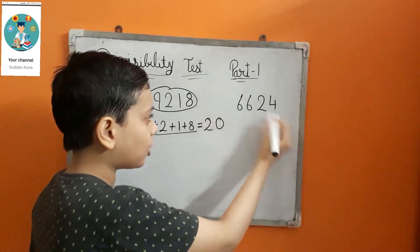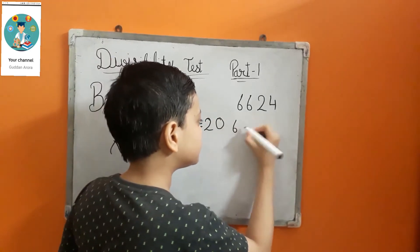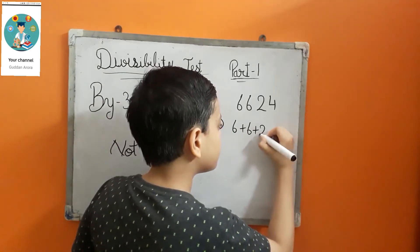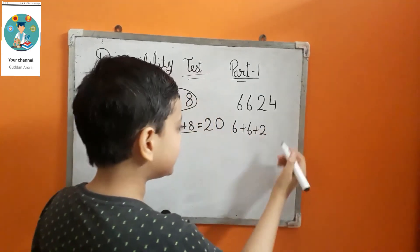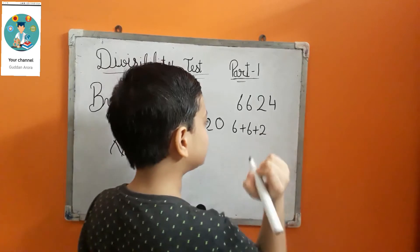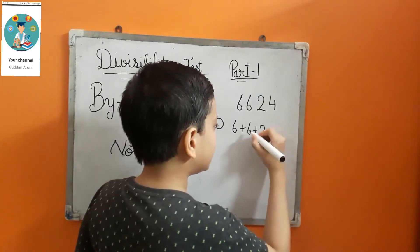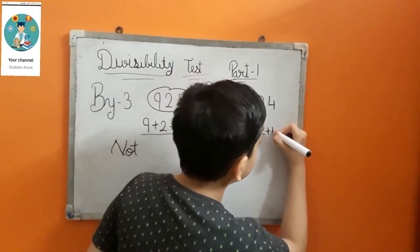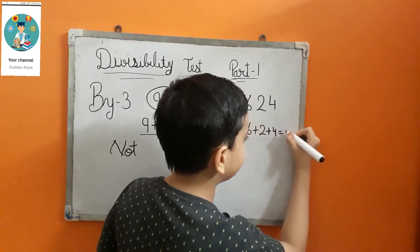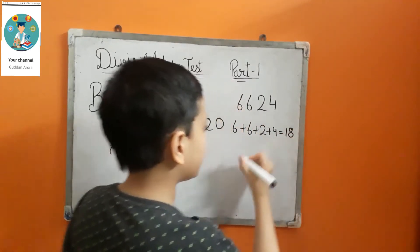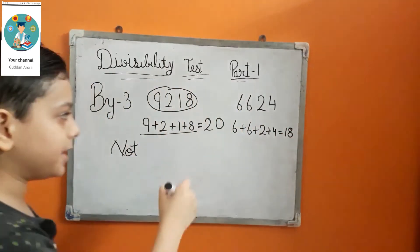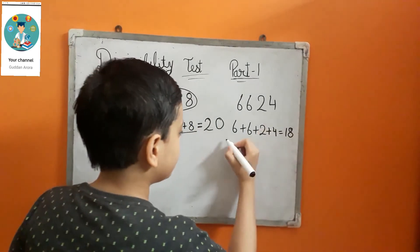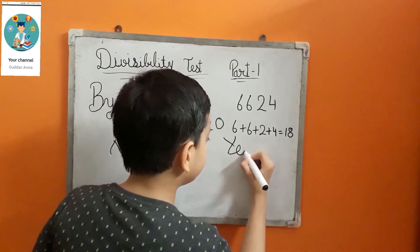Now let's take another example. We sum all the digits: 6 plus 6 equals 12, 12 plus 2 equals 14, 14 plus 4 equals 18. Since 18 comes in the table of 3, this number is divisible by 3.